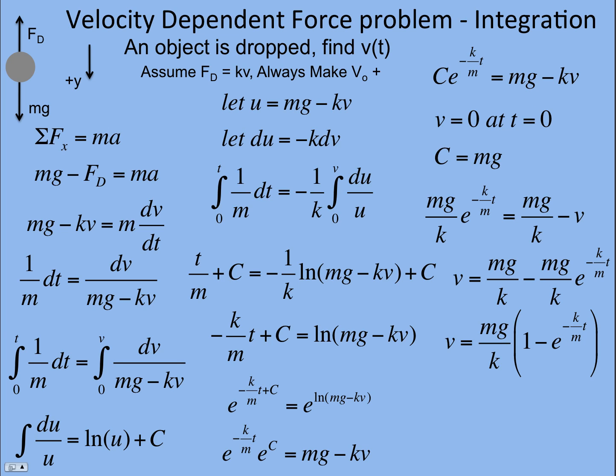If I put in a large value for t, this term goes to 0. It gets real tiny. And so my answer is mg over k. We know that's the terminal velocity. And if you were to graph it, it looks something like this, where the terminal velocity is mg over k.